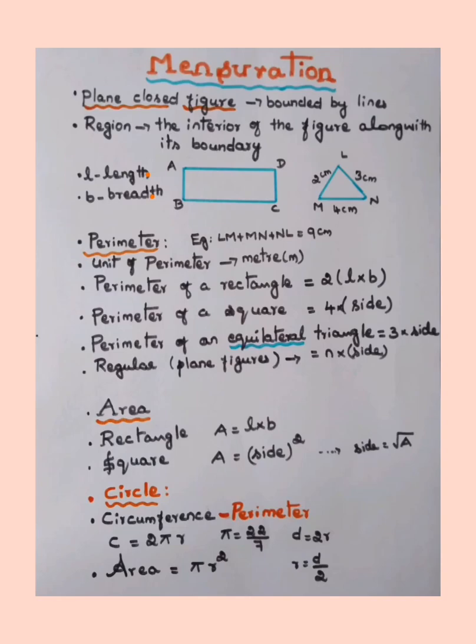We will mainly focus on the perimeter of a few plane figures — that is, the perimeter of a rectangle, square, triangle, and circle. Since we are focusing on this examination, we will cover the important points related to the exam.